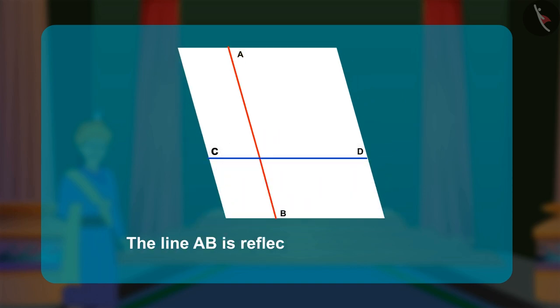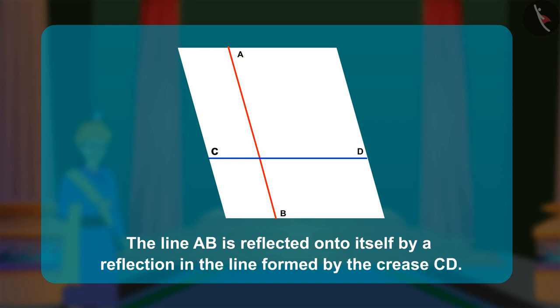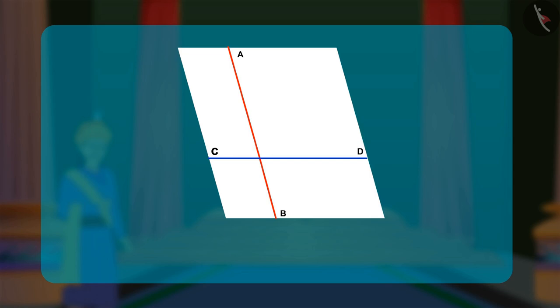The line AB is reflected onto itself by a reflection in the line formed by the crease CD. And since, in this particular case, the given line AB intersects the line CD at an angle of 90 degrees, we can say that the line CD is perpendicular to the line AB.